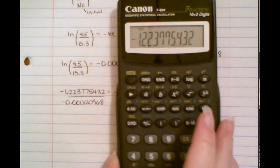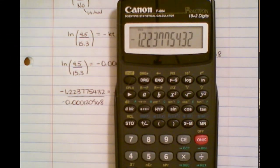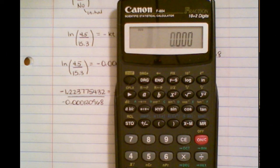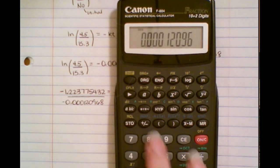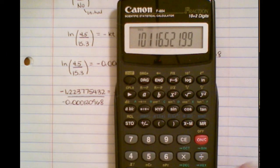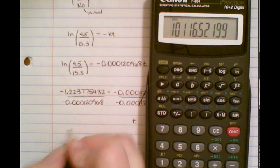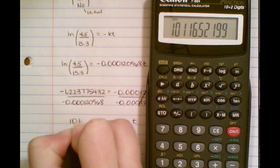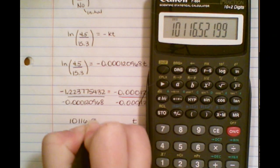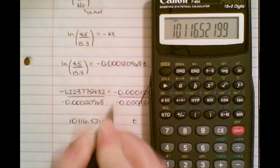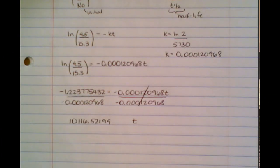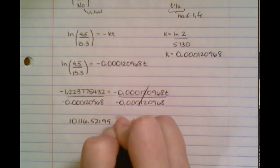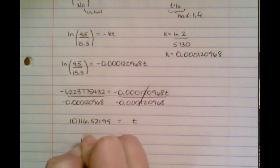And then I'm going to use my handy-dandy calculator now. I'm going to take the answer I had before and divide. And I get this number right here. So I get 10116.52199.